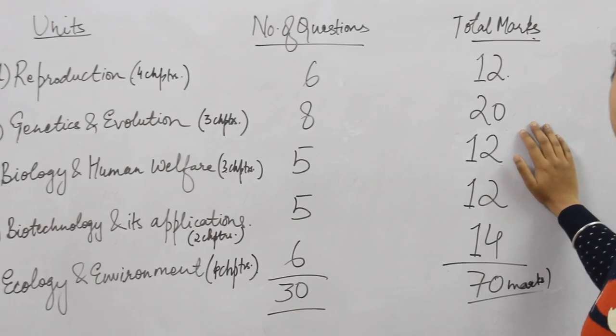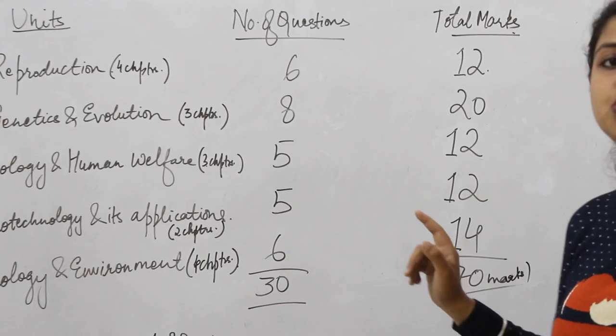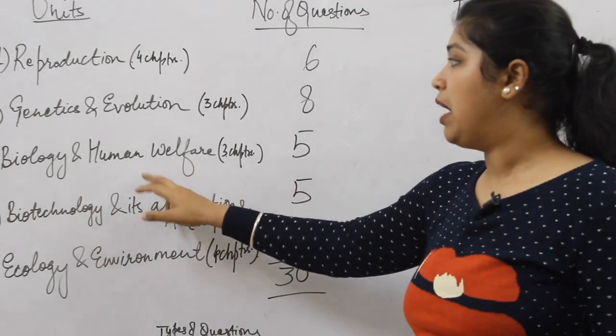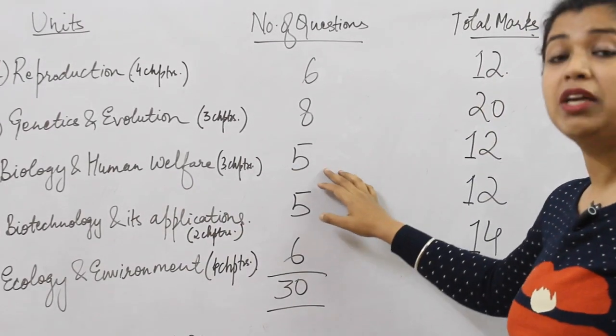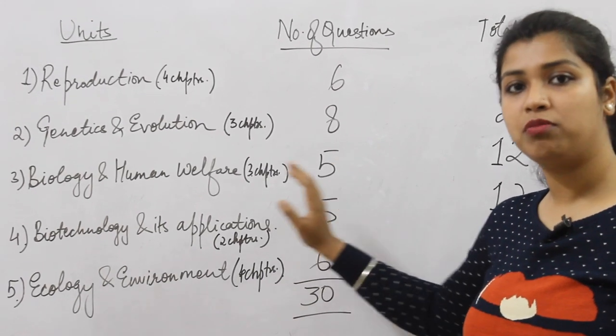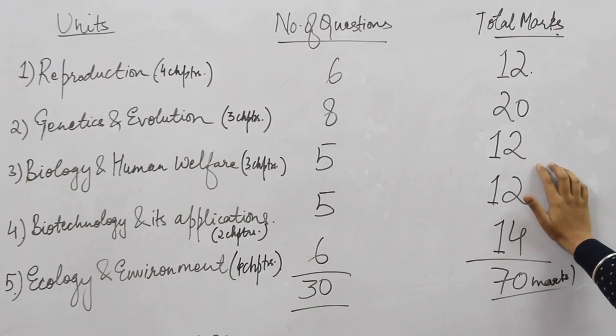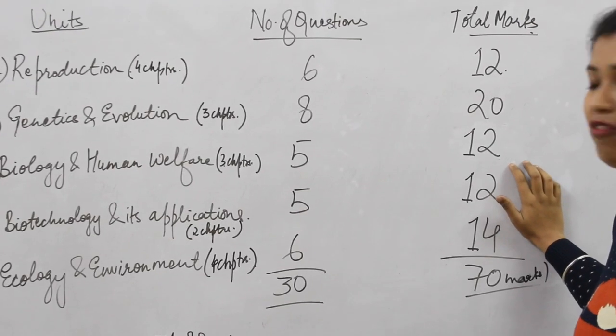From this you can find out that genetics and evolution unit is very important and scoring also. Biology and human welfare consists of five questions from this unit and the total marks it holds is 12 marks.